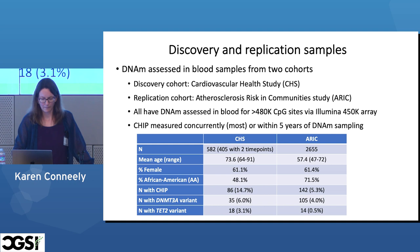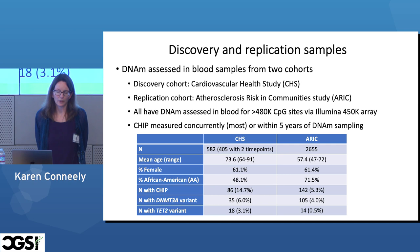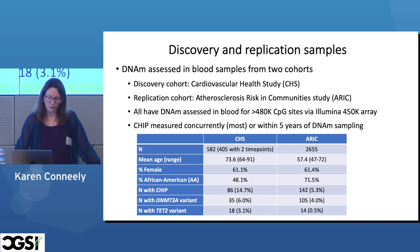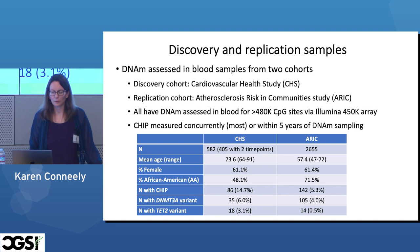Our discovery sample was the Cardiovascular Health Study — we had 582 individuals, with about 400 with two time points, giving 1,000 samples total. An advantage of this sample is that it's much older — average age 73.6 — so the prevalence of CHIP was reasonably high at almost 15%. Our replication sample, the ERIC study, was larger but younger, with 2,600 individuals, though CHIP prevalences are much lower so the power for discovery and replication is probably not all that different.